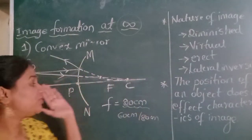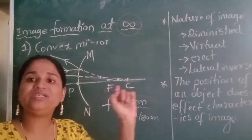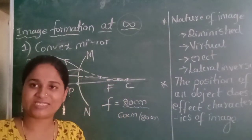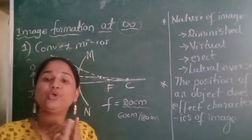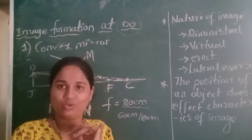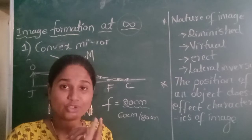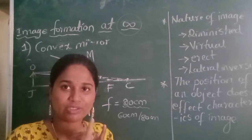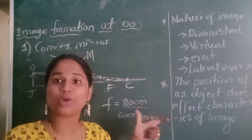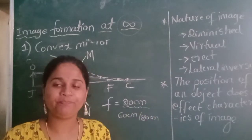Before drawing the ray diagram for image formation by the convex mirror, we should know the position of the object from the pole — that is mandatory. We should also know the radius of curvature of the spherical mirror.